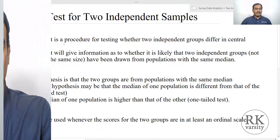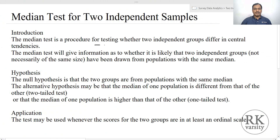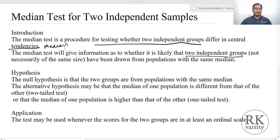I will explain this with two real-life examples using IBM SPSS Statistics. The median test is a procedure for testing whether two independent groups differ in central tendency, measured using the median. The two independent groups are not necessarily of the same size — it is not required.